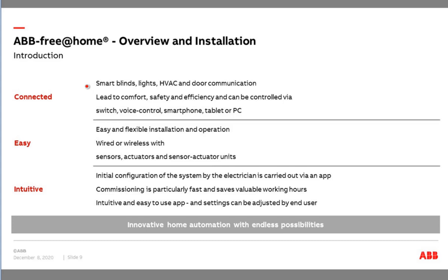All different applications available in your private installation are connected here. Easy means easy and flexible installation and operation. We have the possibility to use wired and wireless sensors, and the actuators can be installed in different ways — centralized and decentralized. This easiness is also important when we talk about the target group of Free at Home. Here we have a system which is not only interesting for a system integrator like in KNX; we also target the electrical installer who may have no knowledge in KNX programming.